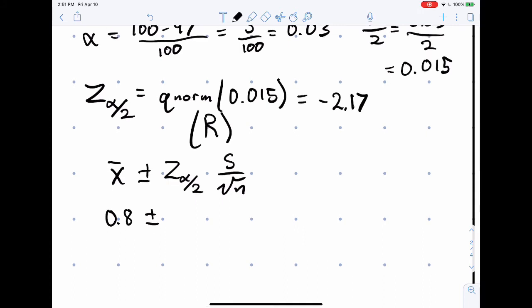So X bar was equal to 0.8 plus or minus this negative 2.17, and the negative doesn't matter here because we're doing a plus or minus.